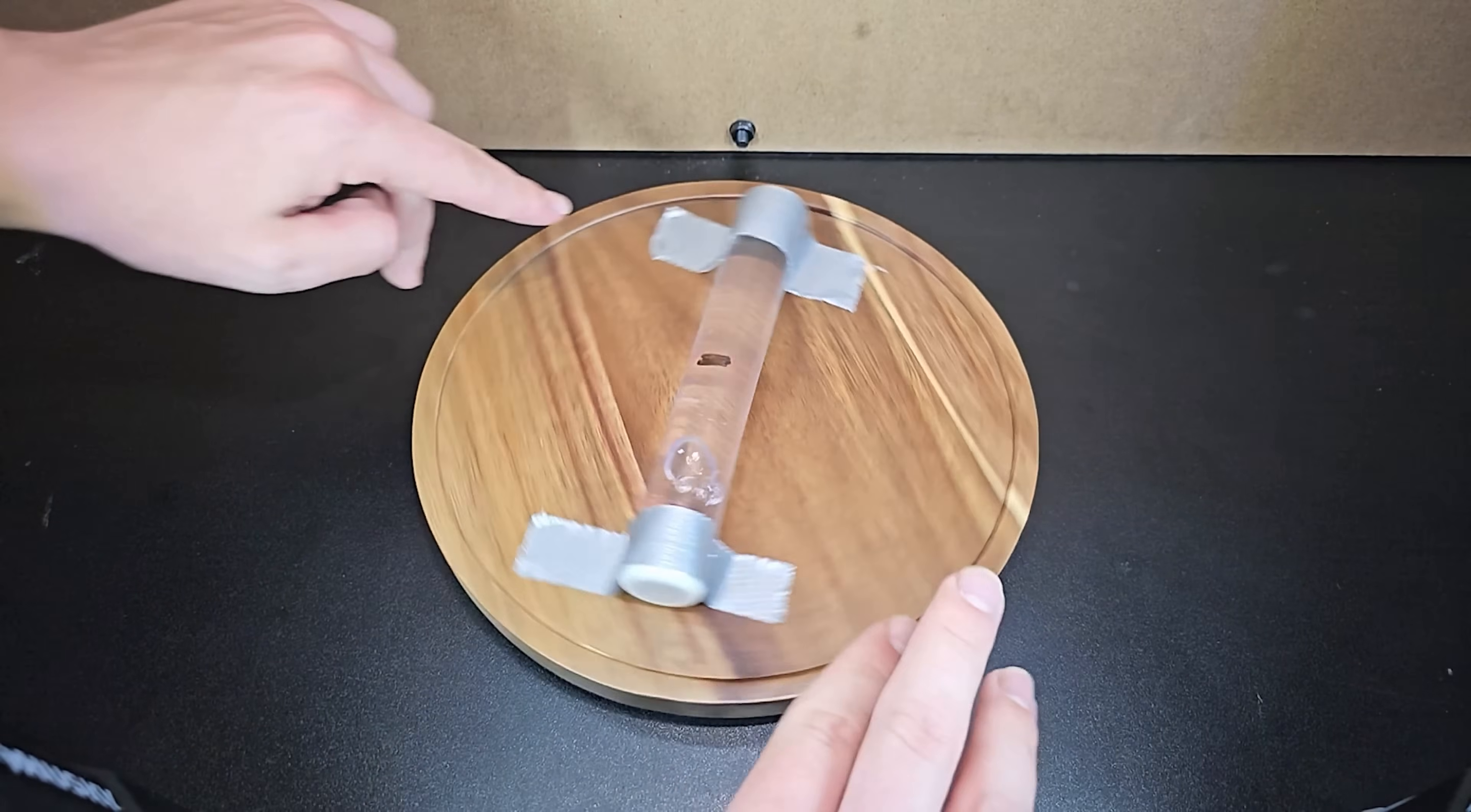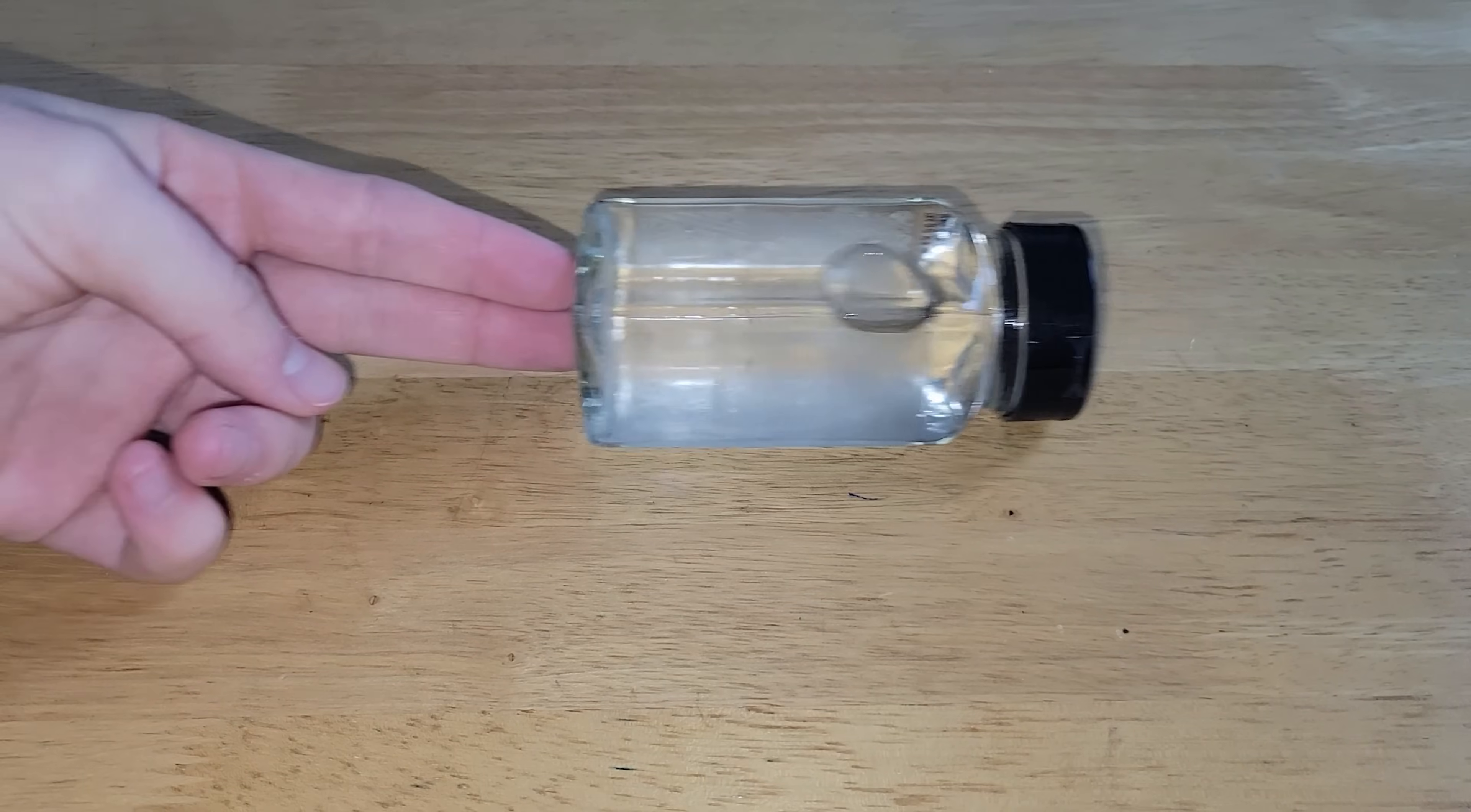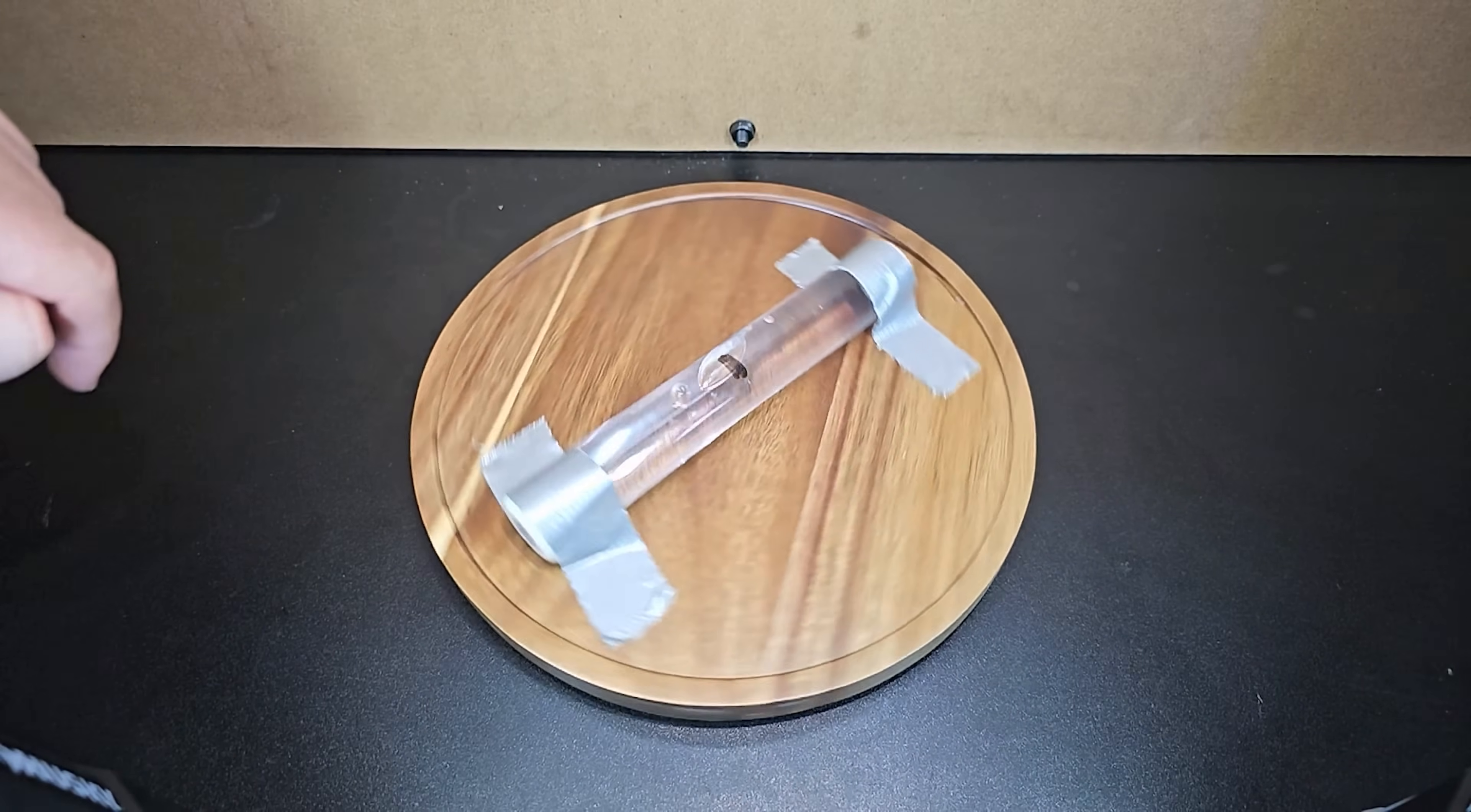Spinning this clear tube with an air bubble does cause the air bubble to move to the center. This is similar to how a helium balloon moves forward in a car when you accelerate like you saw last season. The heavier water moves towards the outsides of the tube which pushes the bubble to the center.